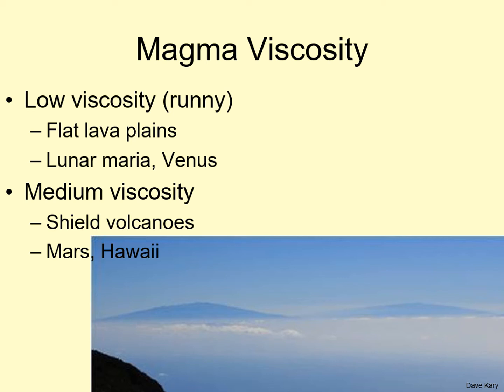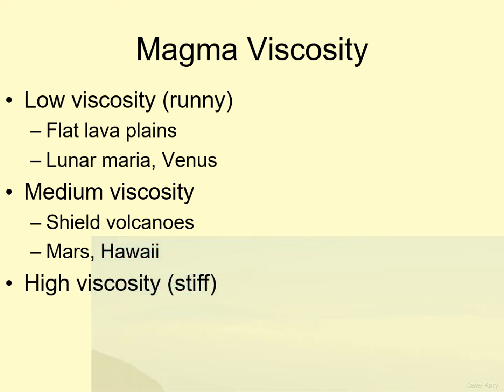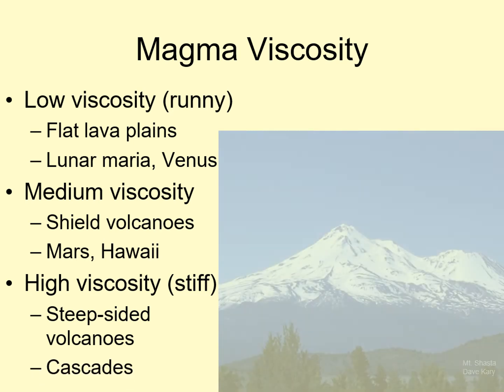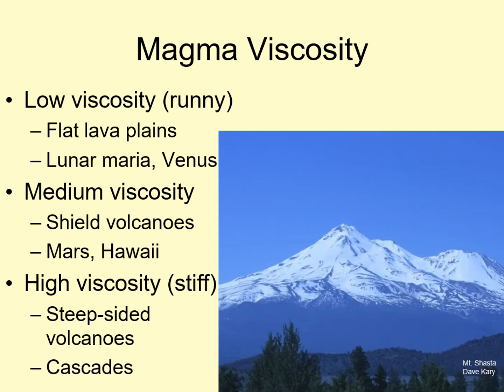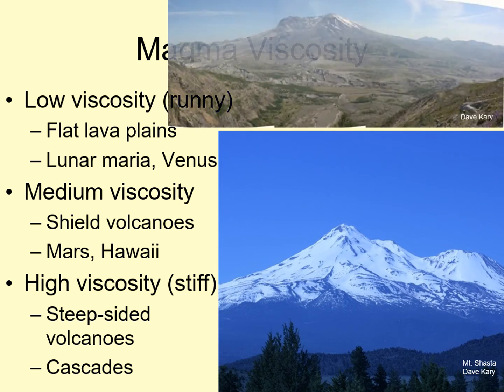Finally, the most viscous magma tends to produce more steep-sided volcanoes, like the ones in the Cascades Range in the Pacific Northwest. The high viscosity of the magma makes it hard for gas to escape, so these volcanoes often erupt explosively, the way Mount St. Helens did in 1980. In fact, many of the most destructive volcanoes on Earth have this sort of high-viscosity magma.